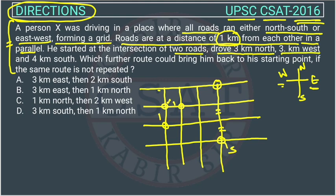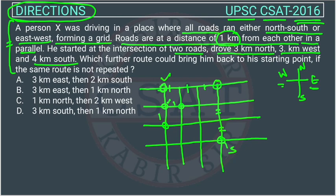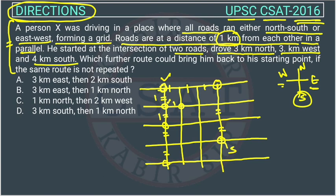Now three kilometers west. From here he is going three kilometers west: one, two, three. So he is reaching here. Then he is going four kilometers south. Now four kilometers south — moving downward: one, two, three, four. We draw one more line here and he is reaching this point.